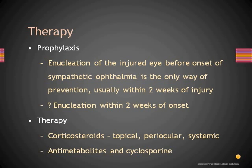The mainstay of therapy for sympathetic ophthalmia is corticosteroids — aggressive treatment by all possible routes of administration: topical, periocular, and systemic. Antimetabolites and cyclosporine have also been used and are sometimes required early in the course of the disease.